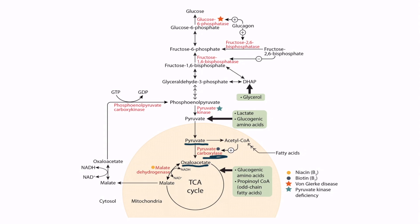The cytosolic pyruvate right here can enter the mitochondria through a facilitated transport protein. Once in the mitochondria, pyruvate can then be converted into oxaloacetate. Also notice from the figure that this enzyme, pyruvate carboxylase, requires biotin, or vitamin B7, as a cofactor.